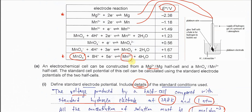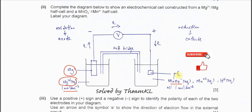In the permanganate half-cell, it must contain permanganate ions, Mn²⁺ ions, and H⁺ — all aqueous and all at 1 mole per dm³. The electrode used is platinum. After that, draw the salt bridge, connect the voltmeter, and complete the circuit. This is the full drawing for the electrochemical cell.